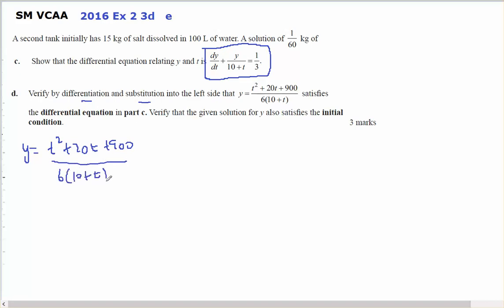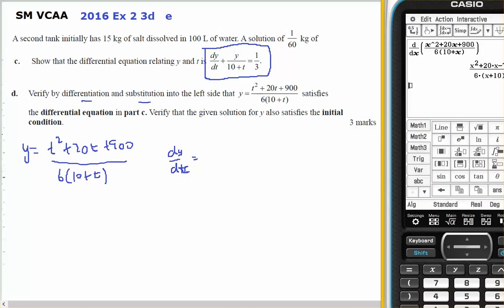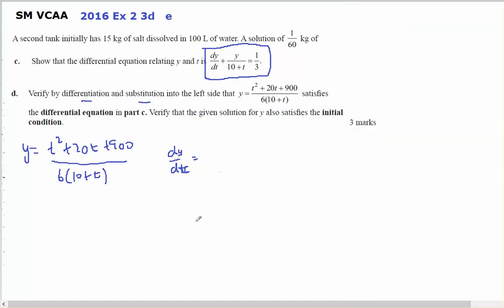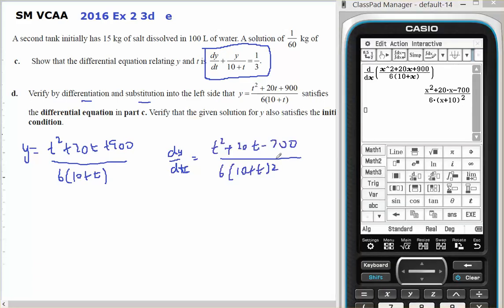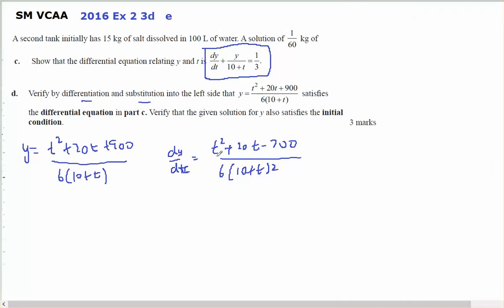And dy/dt of this equals t squared plus 20t minus 700 over 6(10 plus t) squared. This is what the derivative equals. Then I've got to substitute these into the left hand side of this.